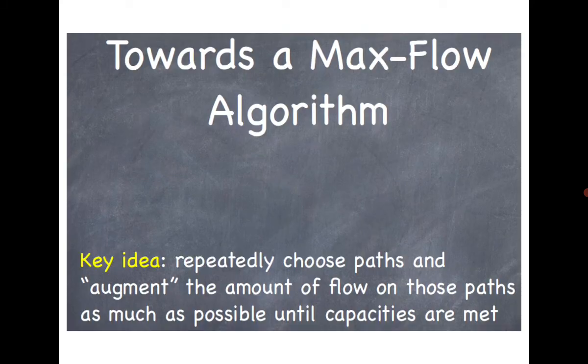Now comes the algorithm. To find the maximum flow, there is no single-step algorithm. When dealing with optimality problems where the maximum is unknown, the best approach is to start with some initial flow and keep augmenting it until there is no choice to augment further. We need to devise a method to know when there is no way to augment, or how to augment. All of this we will see in the algorithm.